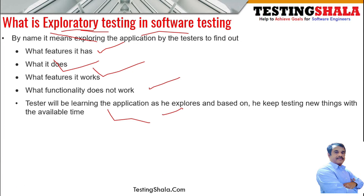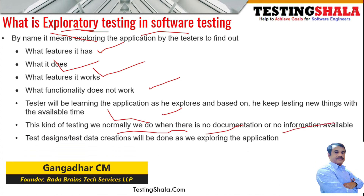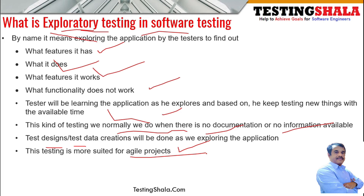Within the given time, the tester has to go through the entire application and find as many issues as possible — that is the main purpose of exploratory testing. Exploratory testing is done when there is no documentation available with the testing team. Once the tester explores the application, they can on the fly create test designs and test data to perform test execution. Exploratory testing is very suitable for agile projects, where not much documentation is available.